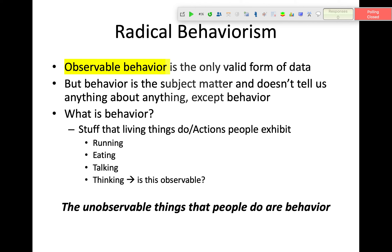In radical behaviorism, similarly, observable behavior is the only valid form of data. But behavior is the subject matter to explain and understand — it doesn't tell us anything about anything except behavior itself. For the radical behaviorist, they're not interested in the inner causes of behavior. They're looking at the causes of behavior at the behavioral level: the interaction between the environment and the organism.